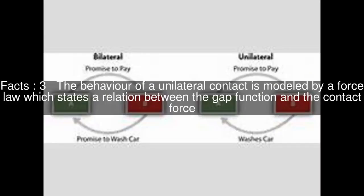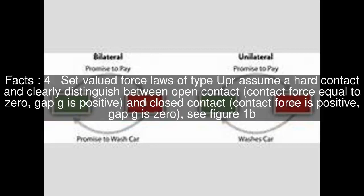The behavior of a unilateral contact is modeled by a force law which states a relation between the gap function and the contact force. Set-valued force laws of type UPR assume a hard contact and clearly distinguish between open contact — contact force equal to 0, gap g is positive — and closed contact — contact force is positive, gap g is 0 — see figure 1b. The models have the same underlying mathematical structure for closed and open contacts.